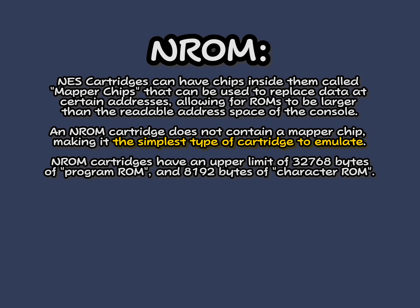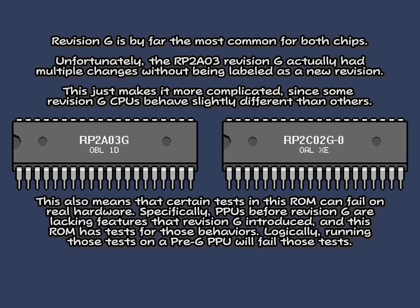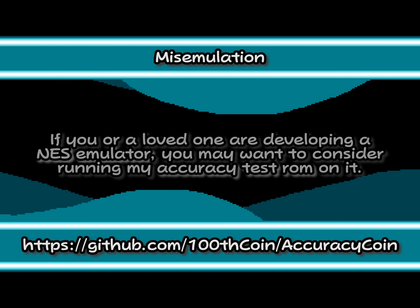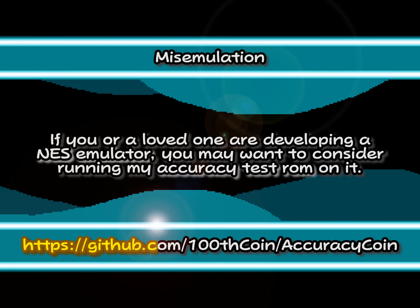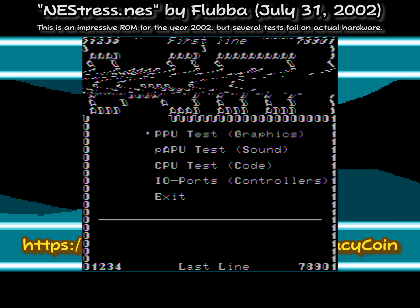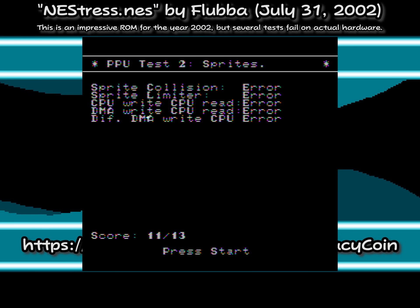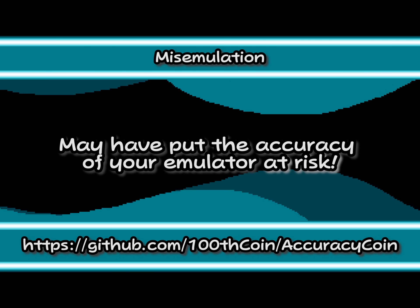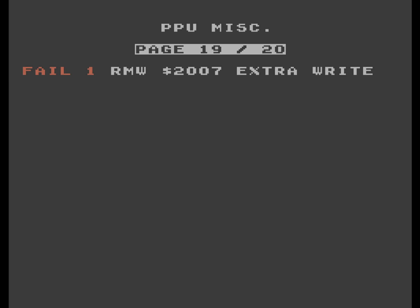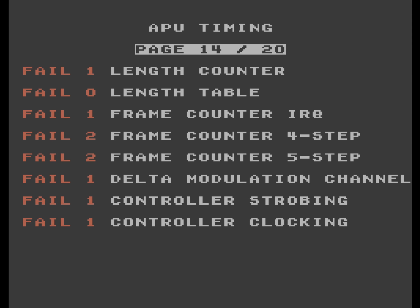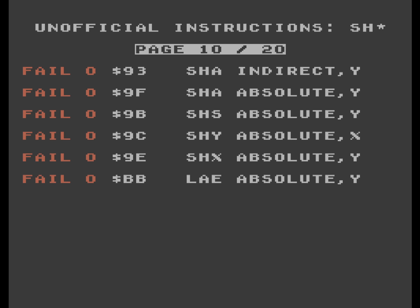Without further delay, allow me to introduce my accuracy test ROM: Accuracy coin! Link to the GitHub in the description. This is an in-ROM cartridge, specifically testing for behavior present in the most common revision of the CPU and PPU chips. If you or a loved one are developing a NES emulator, you may want to consider running my test ROM on it. Decades of old and in some cases entirely incorrect accuracy test ROMs may have put the accuracy of your emulator at risk. In this video, I'll showcase what Nintendo's emulators get wrong, and if applicable, how that affects speedruns performed on them.